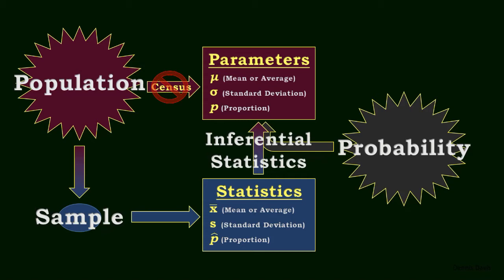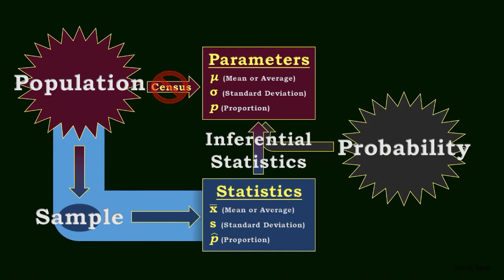And so the big picture of probability and statistics is how we can, in lieu of taking a census, estimate the parameters of a population by taking this detour. Take a random sample of the population, evaluate the statistics of the random sample, use these statistics plus probability to draw an inference about the population parameters.